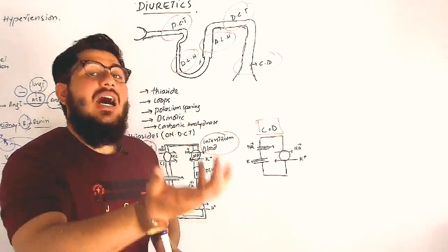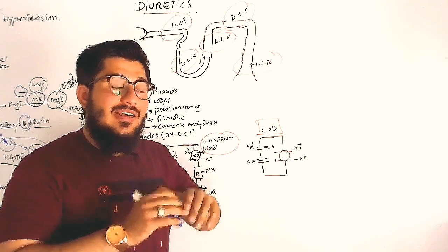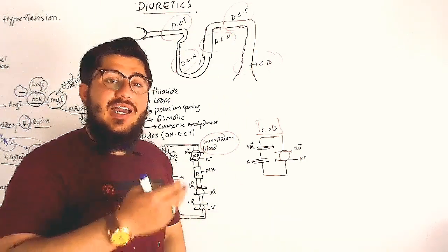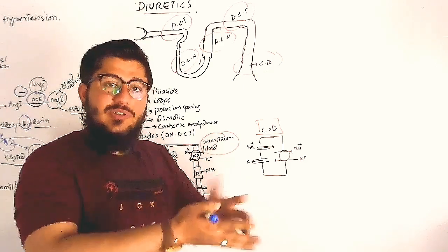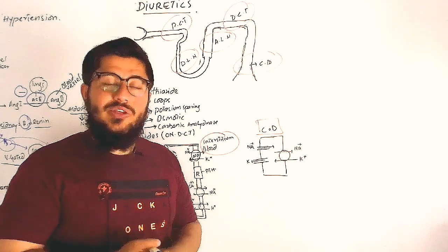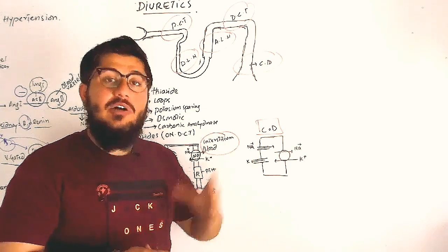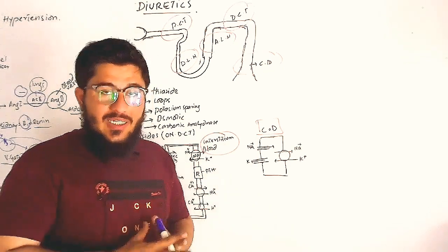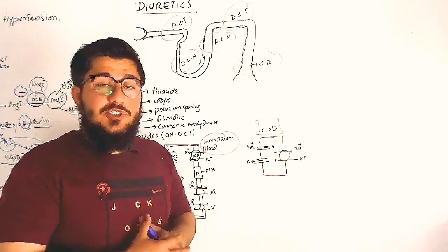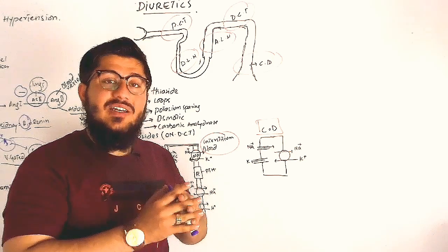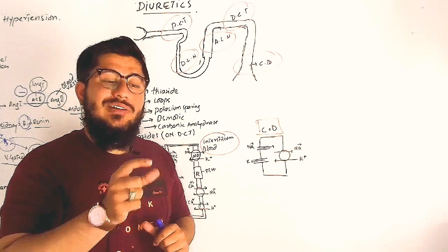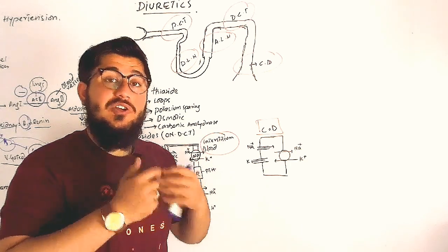What are diuretics? Diuretics means to increase urines. Why do we increase urines? The reason is that when blood pressure is increased, the blood volume is increased. So we want to decrease the blood volume by means of urination.